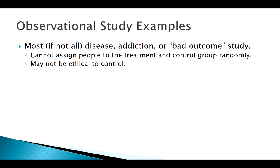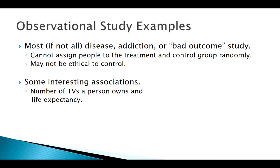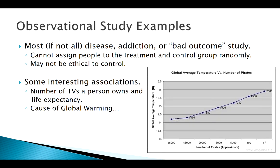Observational studies can find some pretty interesting associations. One study concluded that the more TVs a person owns, the longer their life expectancy — which doesn't really make sense on the surface. Another interesting graphic showed that as the number of pirates in the world went down, temperatures went up. So maybe one of the causes of global warming is that we need more pirates around.